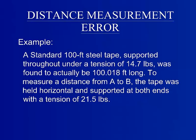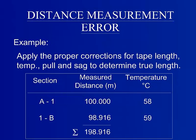In order to demonstrate all of the types of corrections learned previously, let's do an example. Given a standard 100 foot steel tape supported throughout and held at a standard tension of 14.7 pounds was found to be actually 100.018 feet long. To measure a distance from A to B, the tape was held horizontal and supported at the ends with a tension of 21.5 pounds. Using the information given and the chart below, the true length of this example can be found.